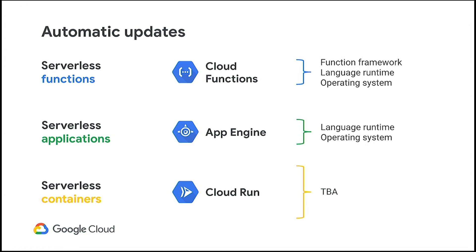If you're using Cloud Functions, App Engine, or Cloud Run, we automatically do a bunch of those upgrades. In Cloud Functions, that covers the function framework, language runtime, and operating system. Same on App Engine — language runtime and operating system. On Cloud Run, since you provide an arbitrary container image, we can't do the same OS-level things, but we're looking at providing Google Ubuntu or Google Python base images that we automatically update. Stay tuned for more on that.